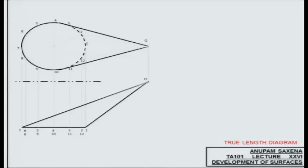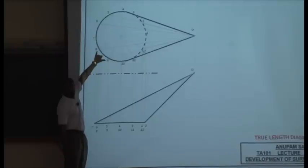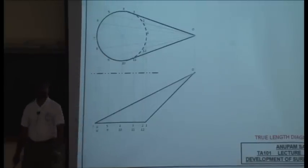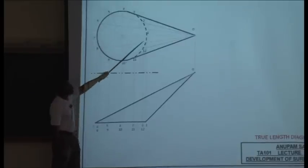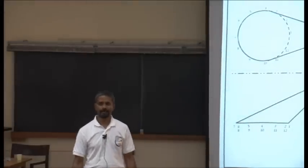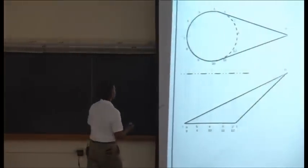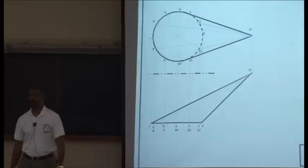To develop this cone now means how you treat these triangles. We will be needing a true length diagram to figure out the true lengths of edges 0-1, 0-2, 0-3 up to 0-12, and of course edges 1-2, 2-3, 4-5, 6-7, 8 and so forth. Look at segment 8-9 — is that true length? And 6-7? In fact, all these line segments joining these vertices will be true length because the corresponding projections in the front view are all horizontal.